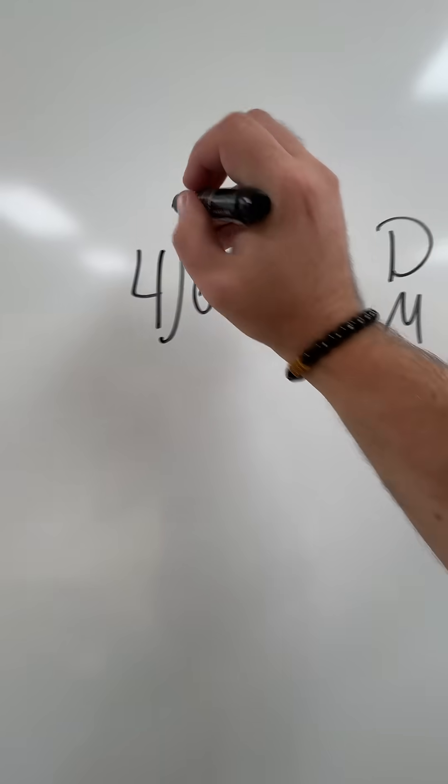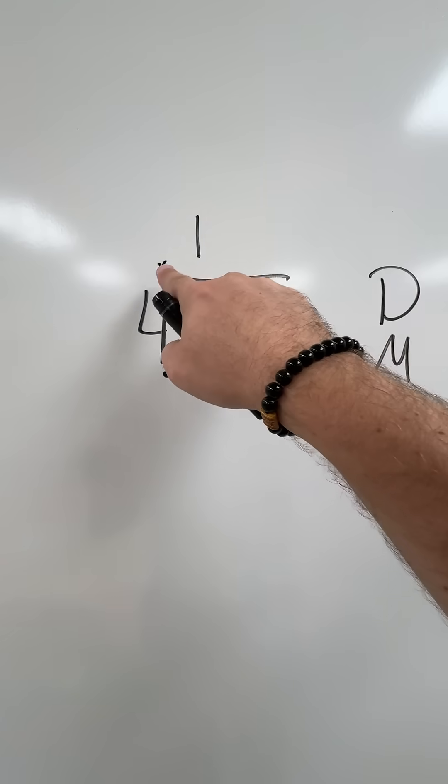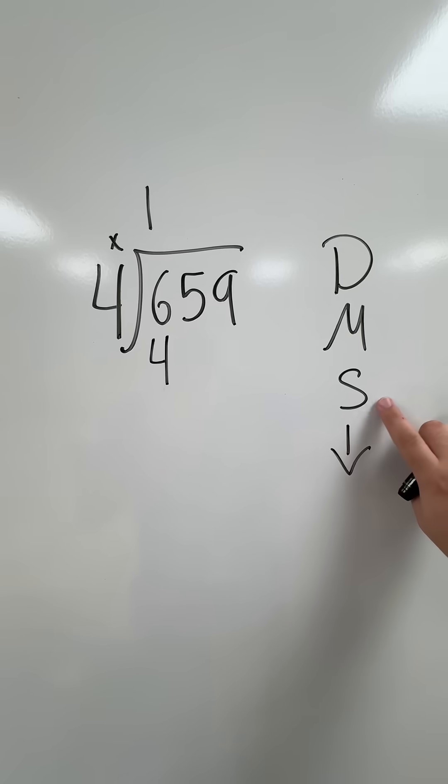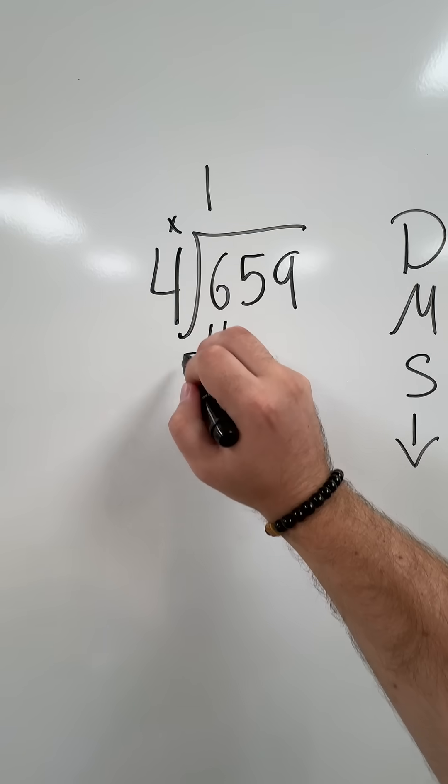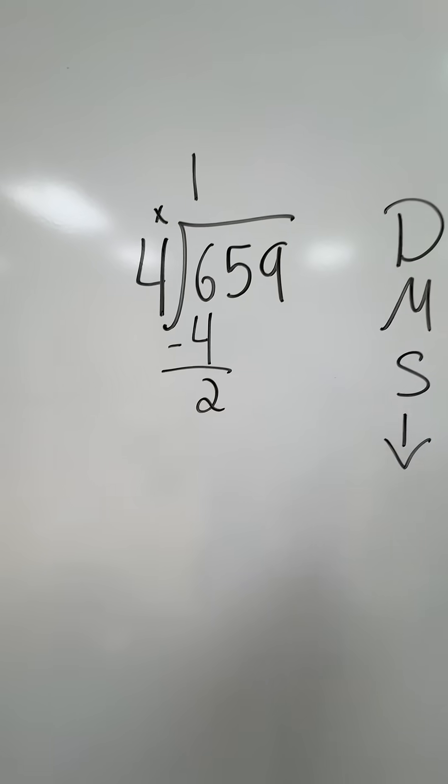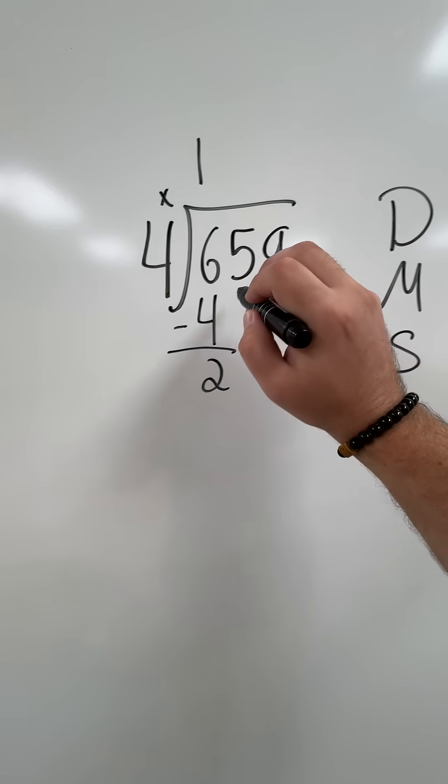My next step is multiply. 1 times 4 equals 4. My next step, subtract. 6 minus 4 equals 2. And then my last step, bring it down. Bring down the 5.